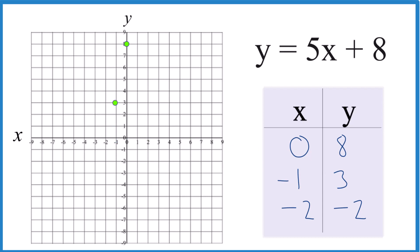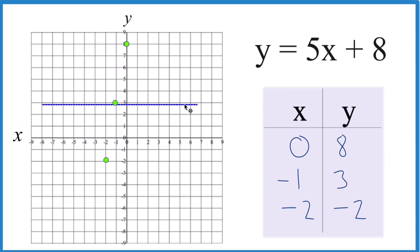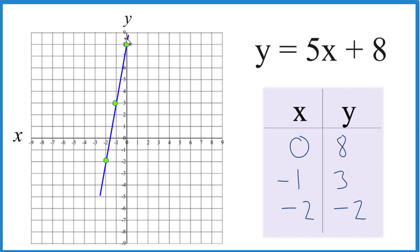You could stop with two points and draw a line, but I like using 3. X is negative 2 and y is negative 2. You see that line there? Let's put a line through it, then we'll put arrows to show that it goes to infinity. So that's the line for y equals 5x plus 8.